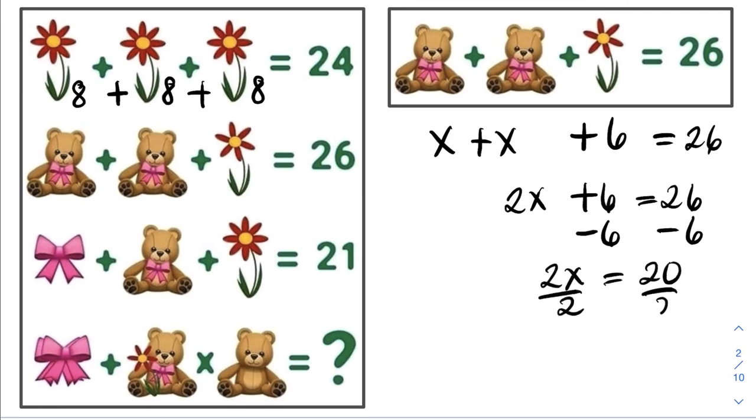Dividing both sides by 2, x value is equal to 10. This means that teddy bear with ribbon is 10 plus 10 plus 6 and that is equal to 26.